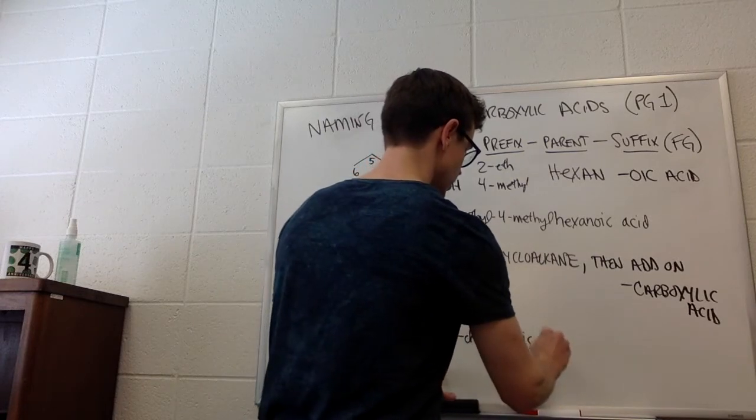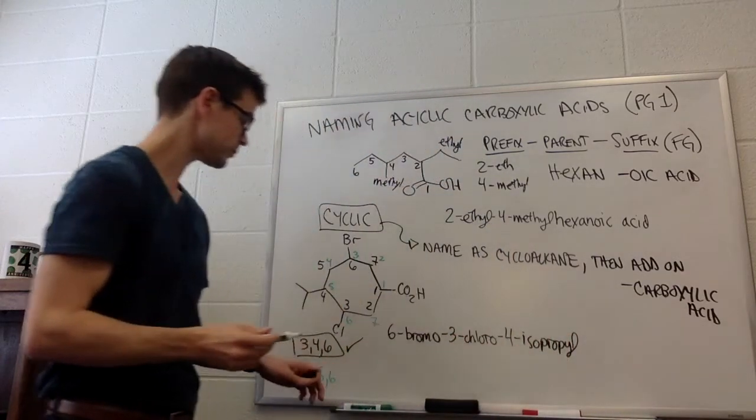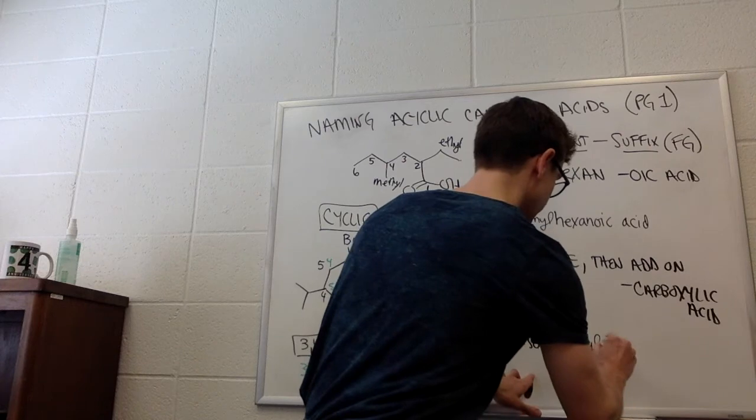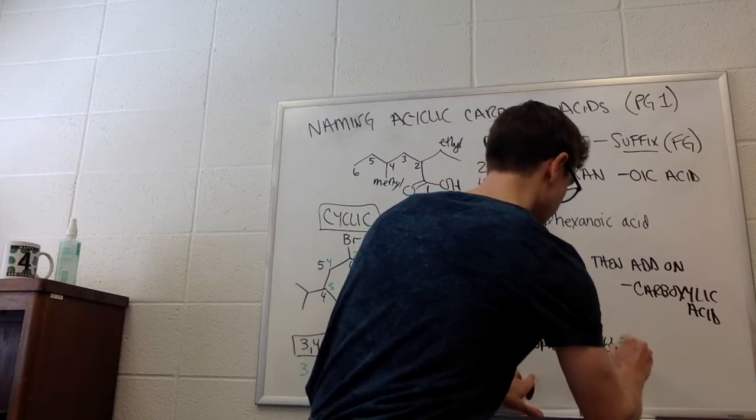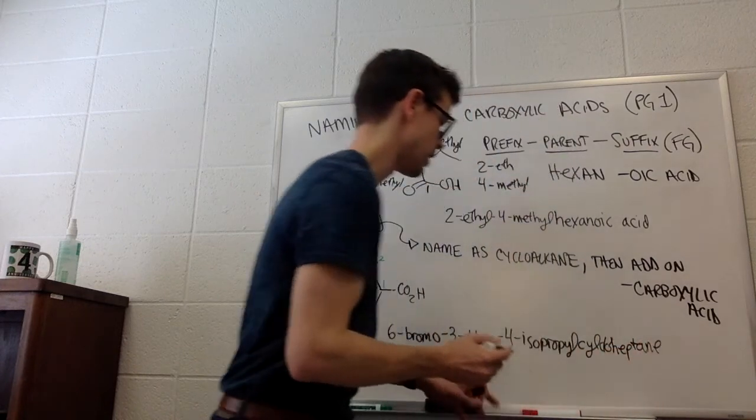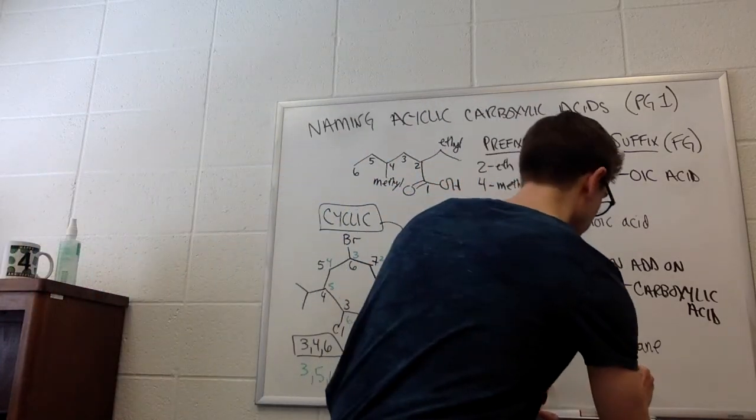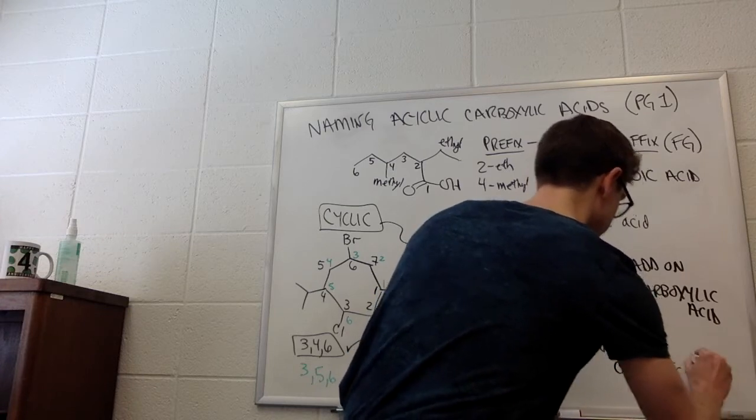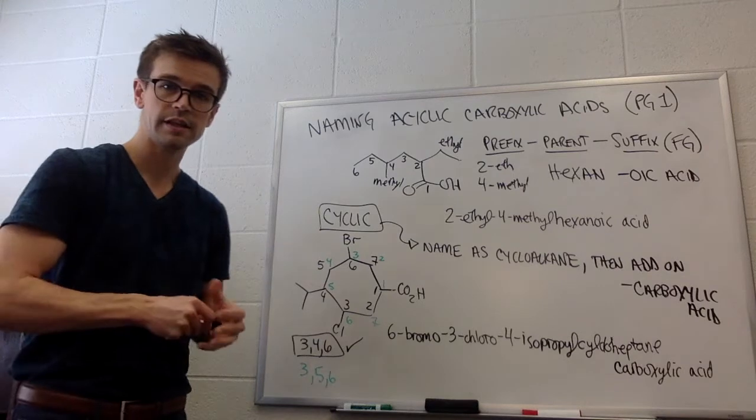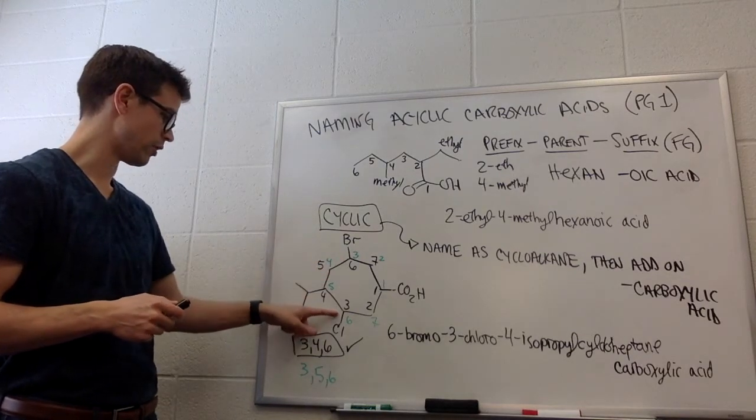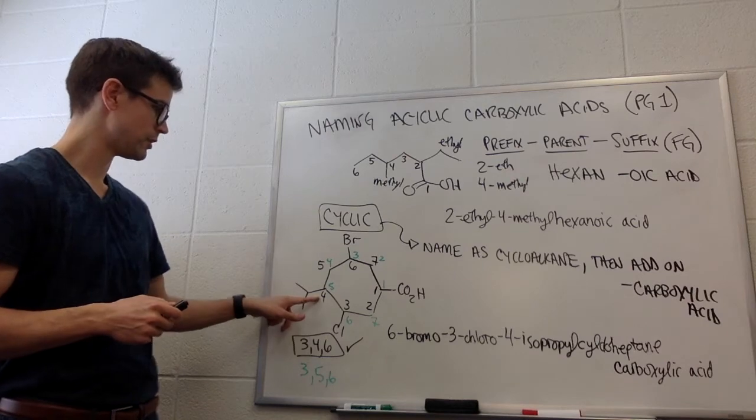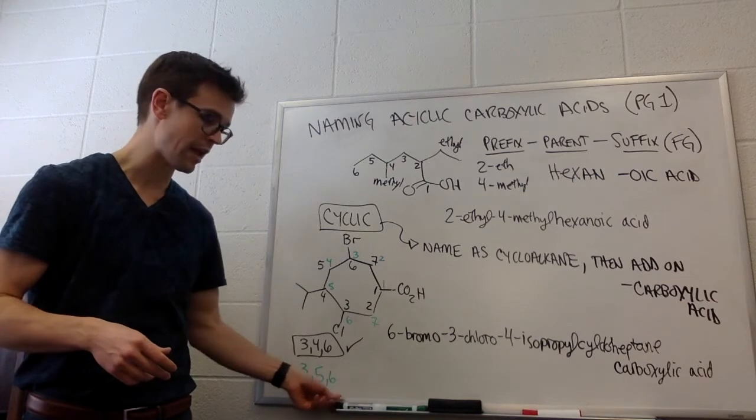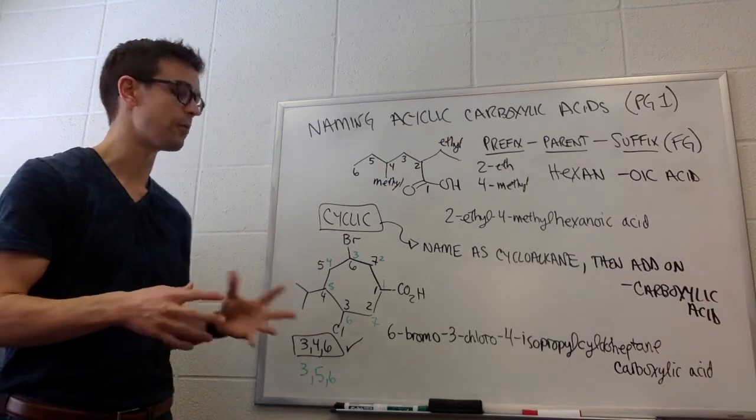And then cycloheptane. It's getting pretty long. So, cycloheptane, and then we leave a space and we write carboxylic acid. So, the name of this molecule is 6-bromo, 3-chloro, 4-isopropyl, cycloheptane, carboxylic acid. So, that is how you name acyclic and cyclic carboxylic acids.